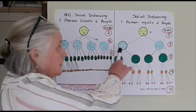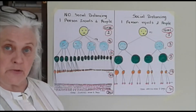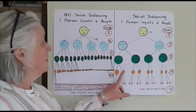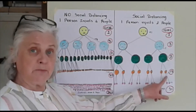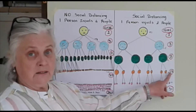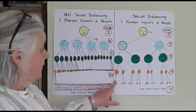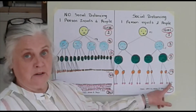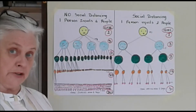They infect two people each, so there are four more people — we add them in and now we've got a running total of seven on day three. Day four: they infect two people each, so now we have eight more people, giving a running total of 15. Day five: they infect two more each, and there are 16 more people, which we add in — after day five we have a running total of 31.